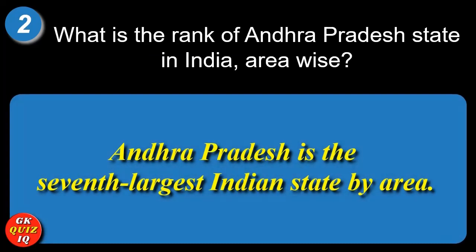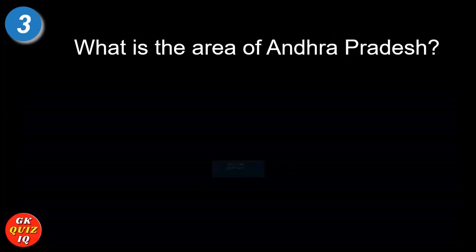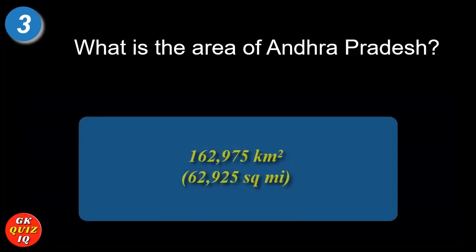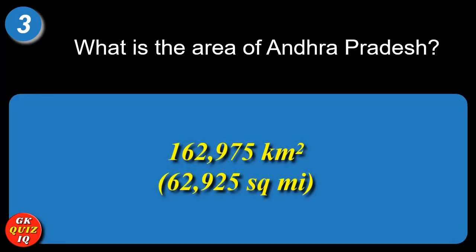What is the rank of Andhra Pradesh state in India area wise? Andhra Pradesh is the 7th largest Indian state by area. What is the area of Andhra Pradesh? 1,62,975 square kilometers.